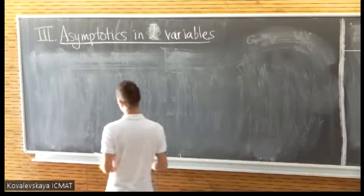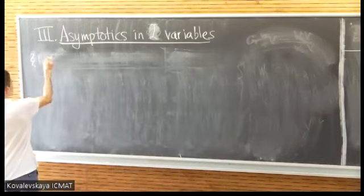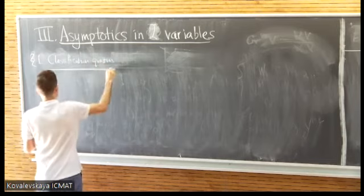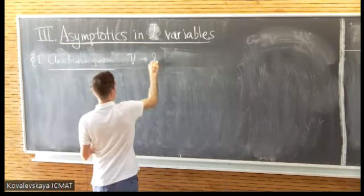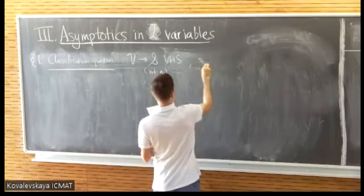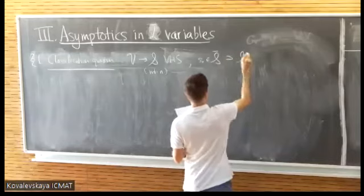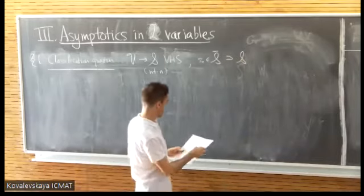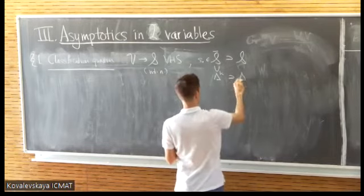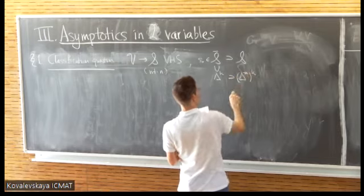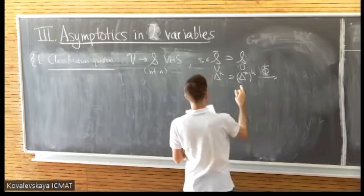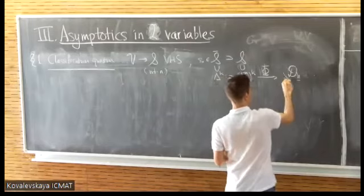Let me begin with the most naive formulation of the classification question I have in mind. Given a variation of Hodge structure over S, with S-naught a boundary point in a good compactification — meaning a compactification by a normal crossing divisor of S — imagine that I have a product of k disks embedded here so that the intersection with S is the product of k punctured disks. I want to understand how the restriction of my variation of Hodge structure to about this boundary point behaves.